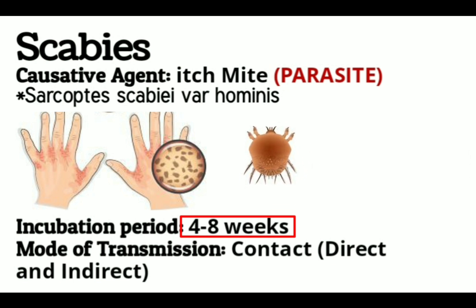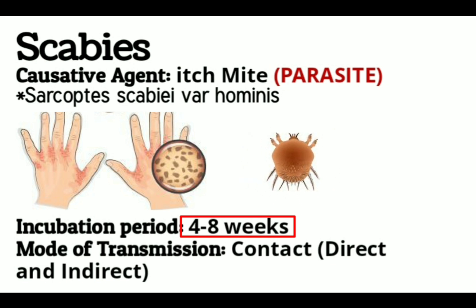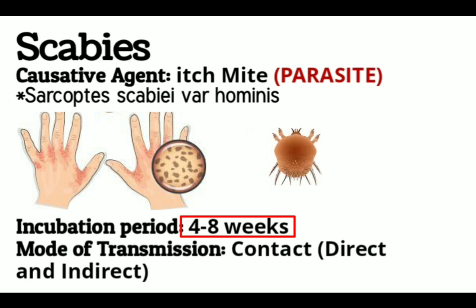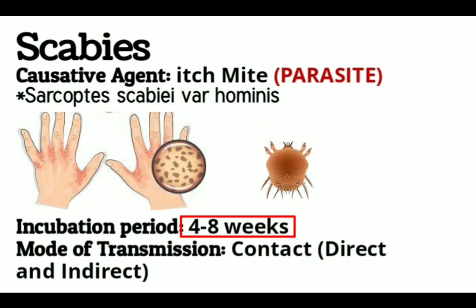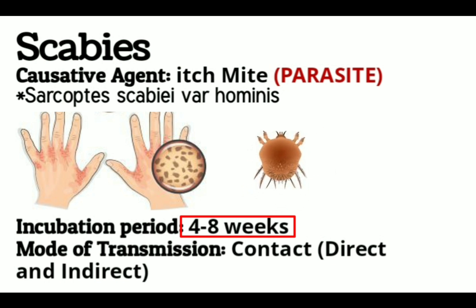According to the CDC, if a person has never had scabies before, symptoms may take 4 to 8 weeks to develop. But for a person who has had scabies before, symptoms usually appear much sooner — 1 to 4 days after exposure. So if it's your first time getting scabies, symptoms appear in 4 to 8 weeks; if you've had it before, 1 to 4 days after exposure.